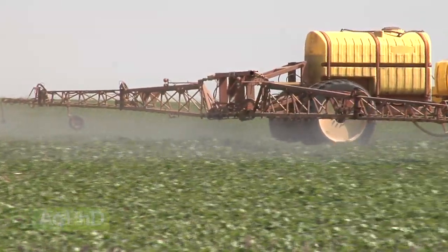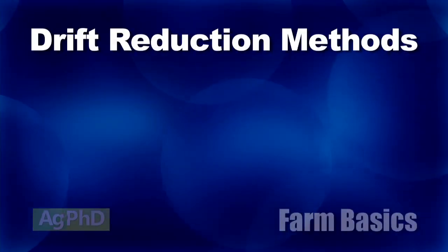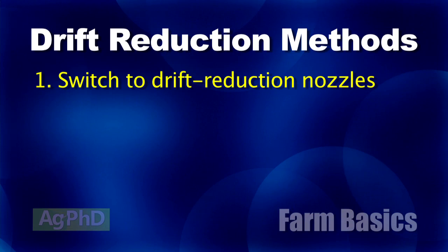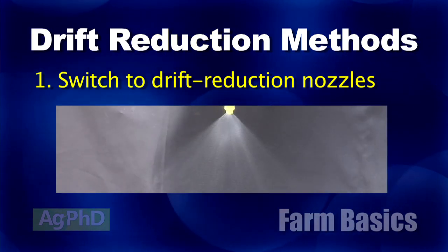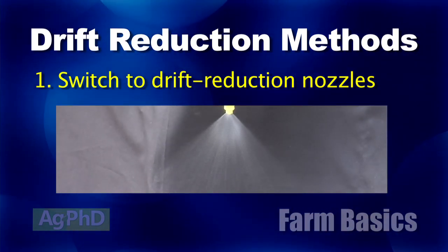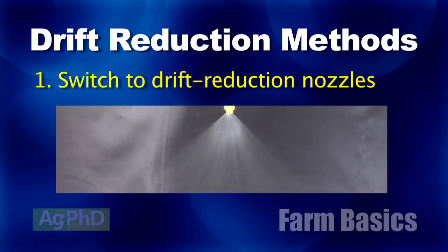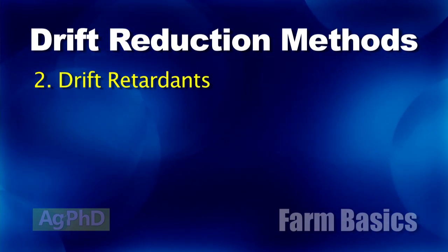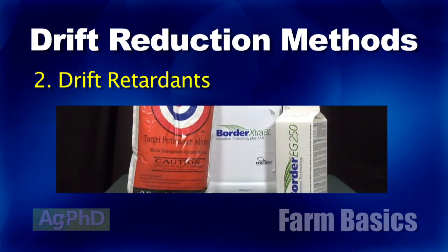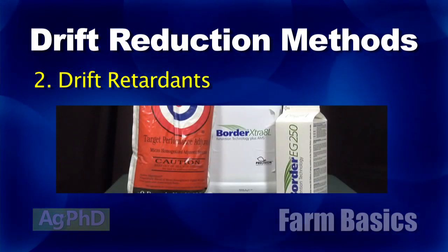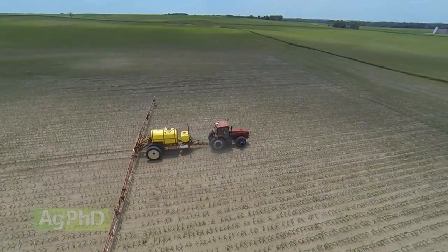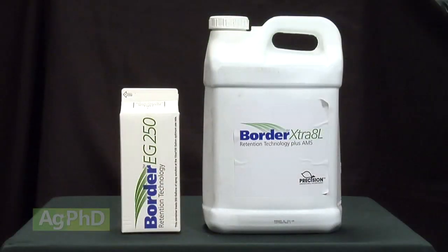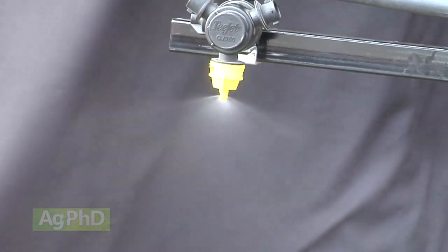How does the farmer make the droplet size bigger? There are two main ways. Number one is by switching spray nozzles — that's usually what we recommend. Certain spray nozzles will literally make the drop size bigger and more consistent. The other choice is using what we call a drift retardant, which makes the liquid a little more thick, and when it's thicker, the droplet size gets bigger. You could possibly use both, but most farmers are going to use either one or the other.